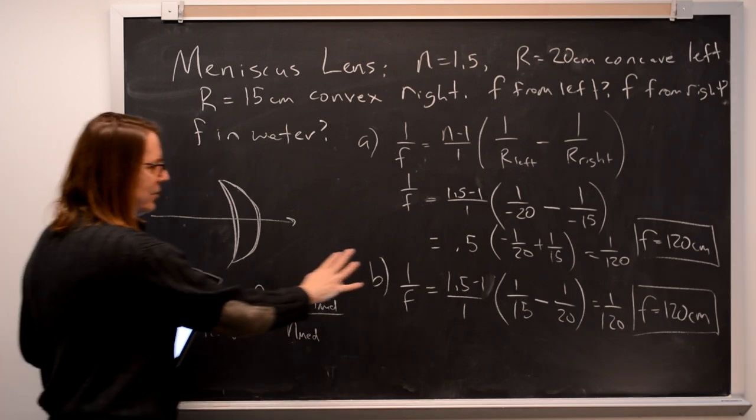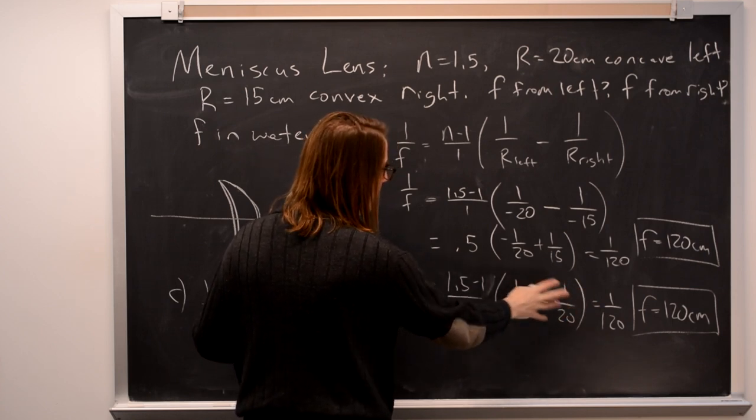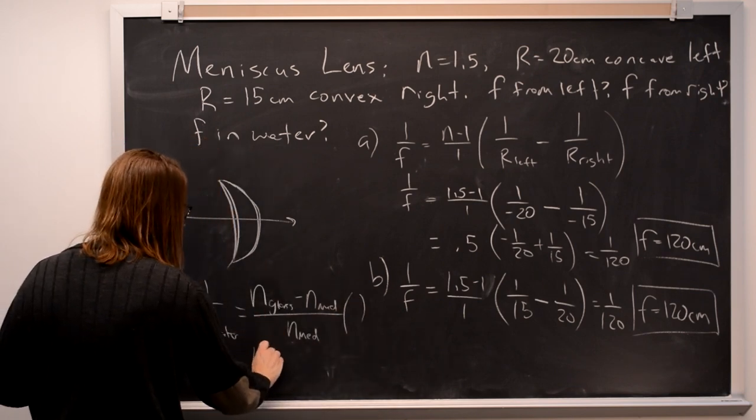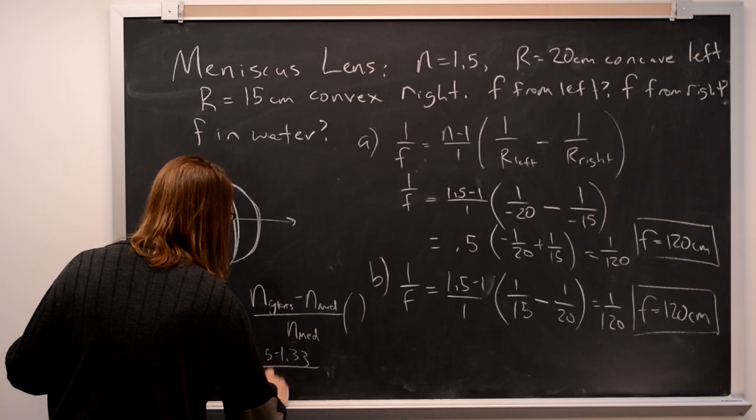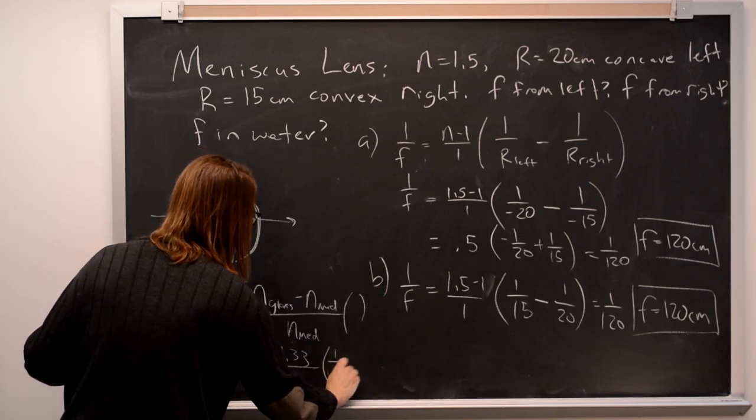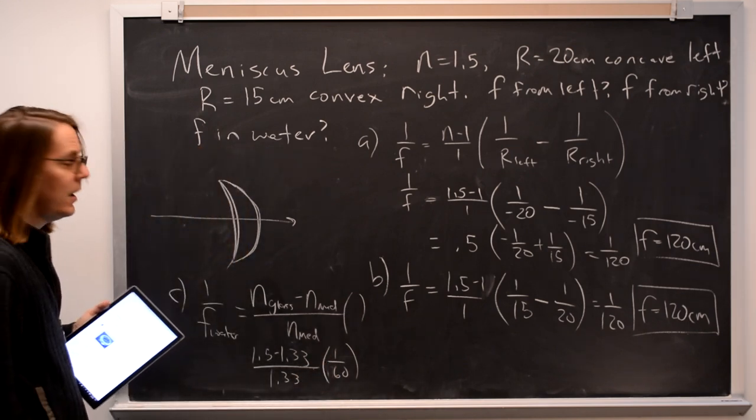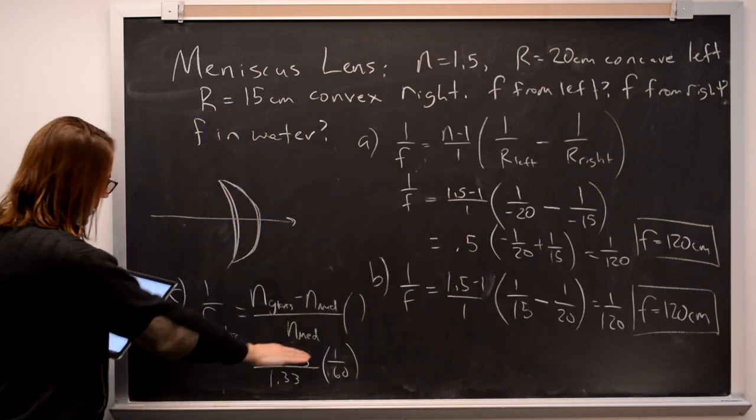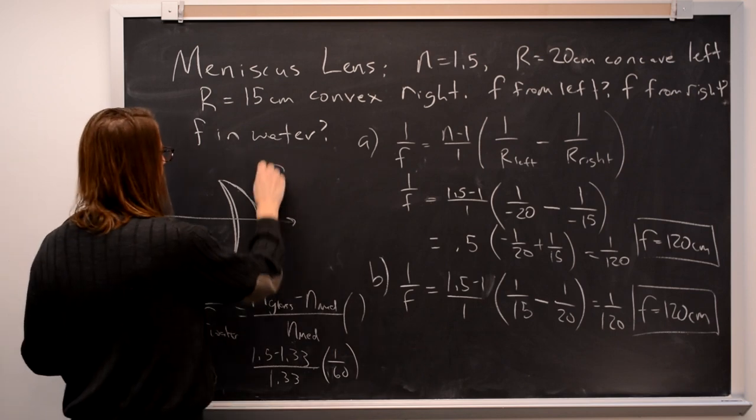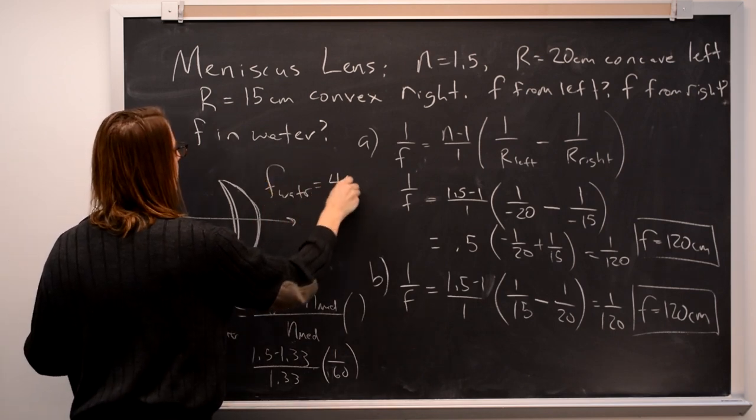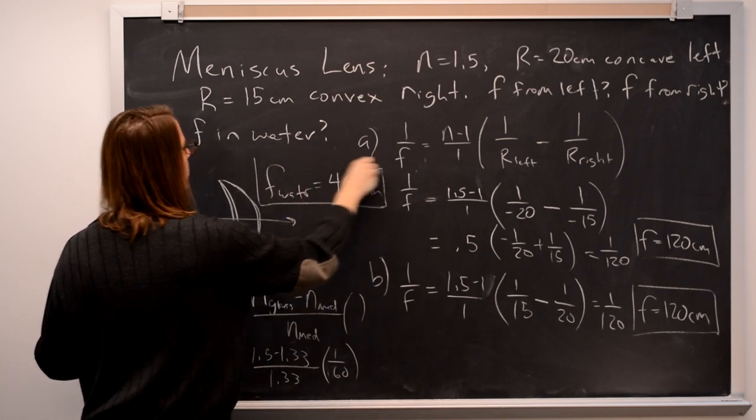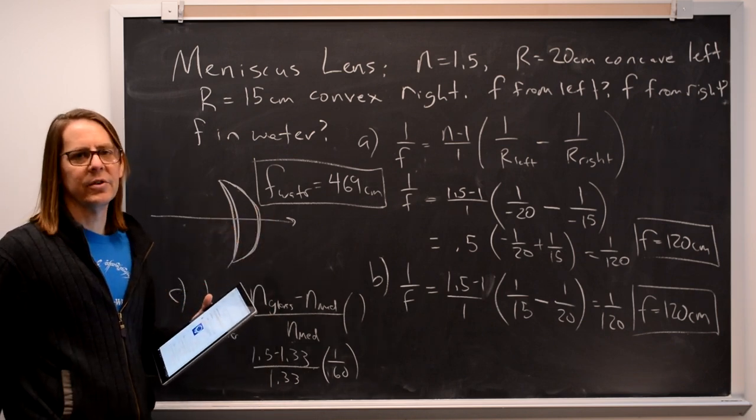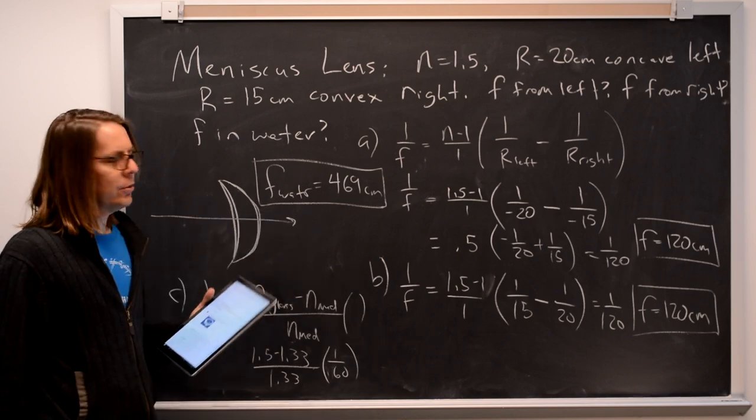Anyway, let's put in some numbers. It's basically this same part. This comes out to be 1 over 60 times that same part. So 1.5 minus 1.33 for water over 1.33 times this whole thing. It's still 1 over 60. The geometry is the same. So what this does is it puts a much smaller number here than 0.5, makes the focal length longer. So if you just multiply that out and invert it to get f, you get that f in water is 469 centimeters. Much longer because we've basically taken away the refracting power of the glass by having it much closer to the index of the medium. So it bends the rays a lot less, makes the focal length longer.